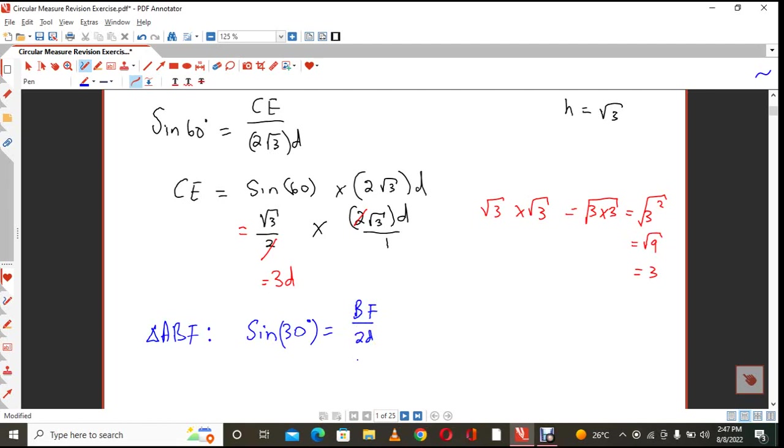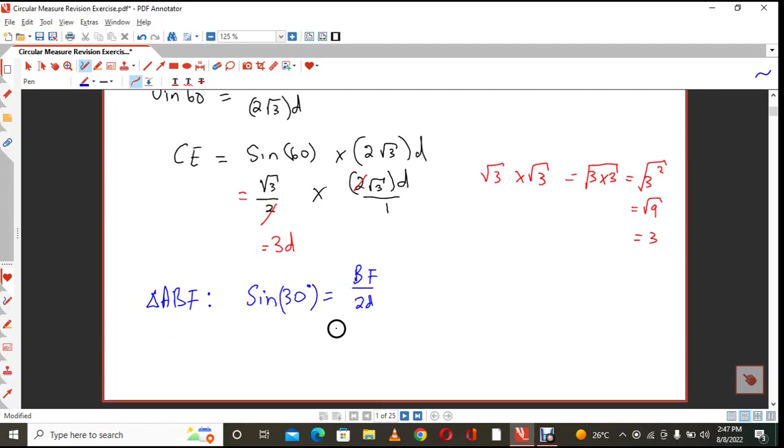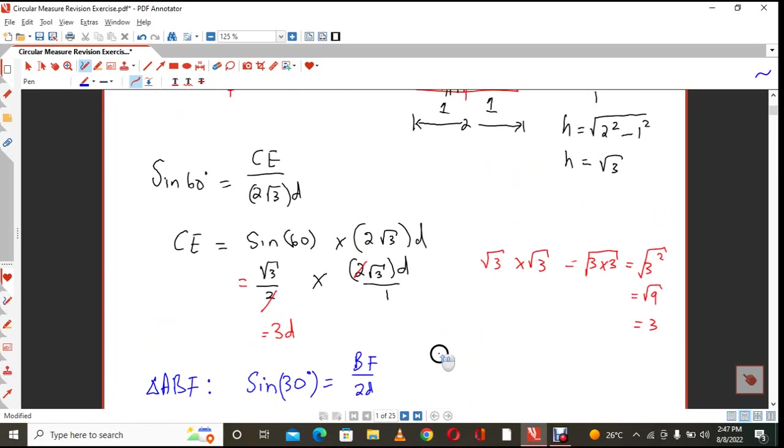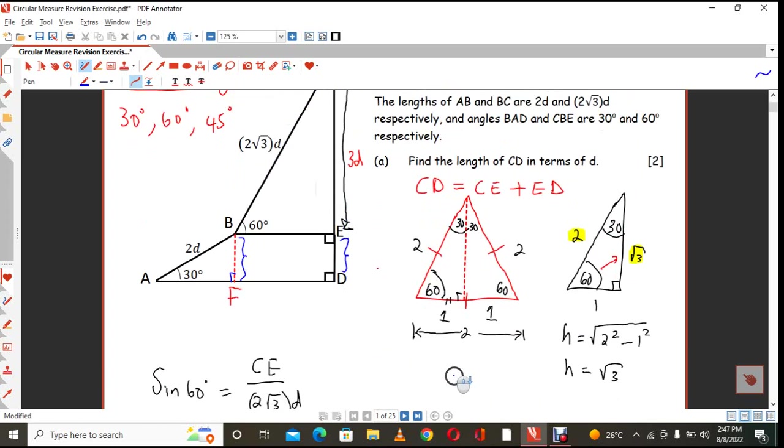So when you look at cross-multiplying, this is going to give you BF is equal to 2D multiplied by the sine of 30 degrees. So 2D, and we know that the sine of 30 degrees, if you go to our special triangle, the sine of 30 degrees will be 1 half.